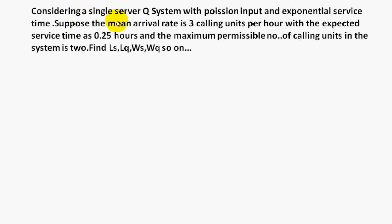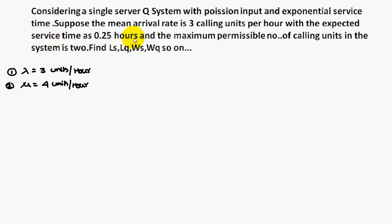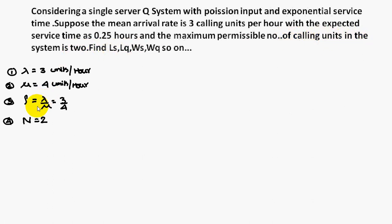Now we are considering a problem. The mean arrival rate is 3 calling units per hour, so lambda equals 3 units. Service time is 0.25 hours, meaning the server handles 4 units per hour, so mu equals 4 units. Therefore, traffic intensity rho is lambda divided by mu, that is 3 by 4. The system capacity is 2, so the maximum permissible number of calling units in the system is 2, therefore N equals 2.